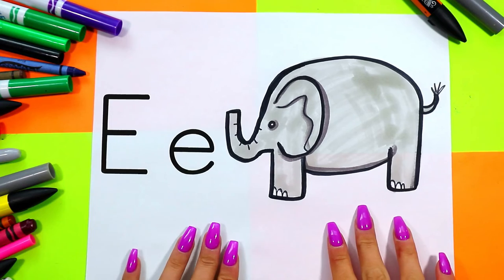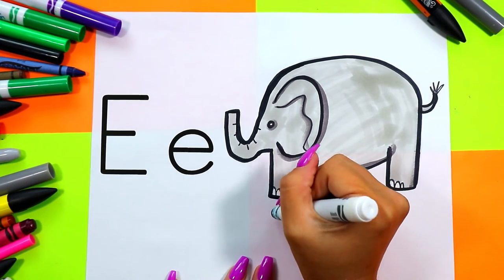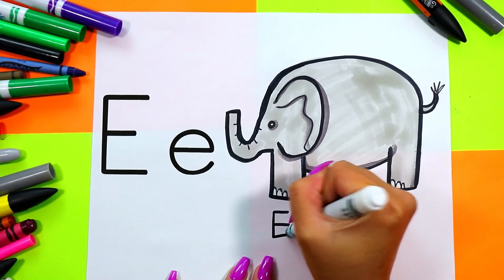And once you're done coloring your elephant that starts with the letter E, and of course, E spells elephant.